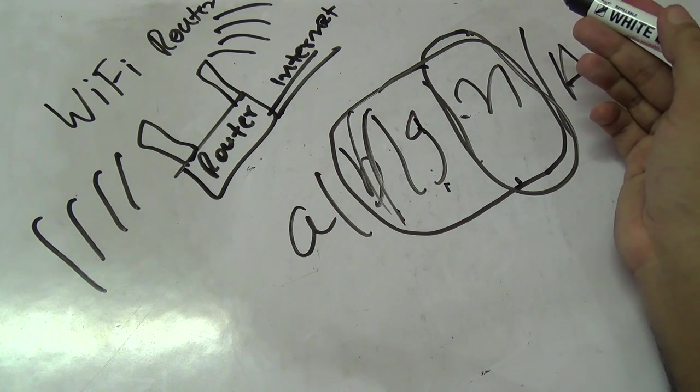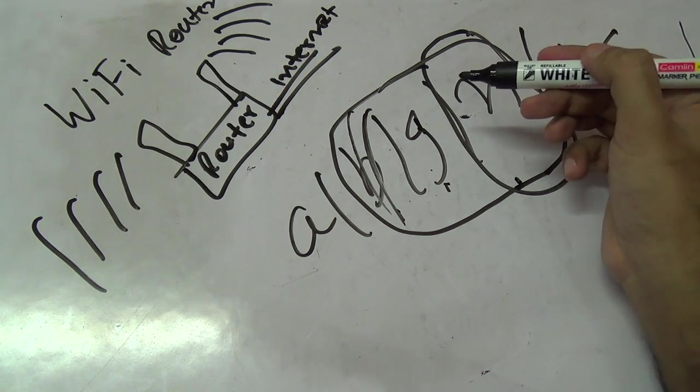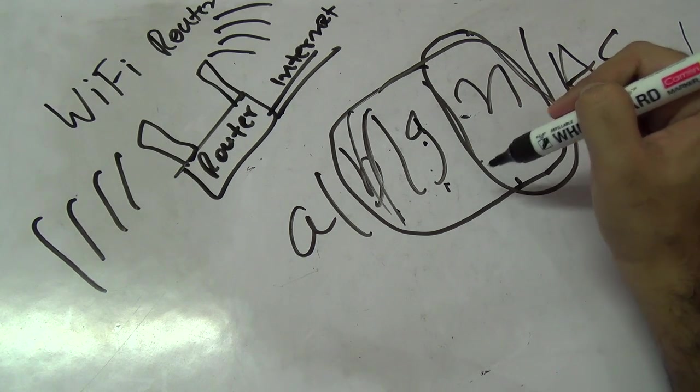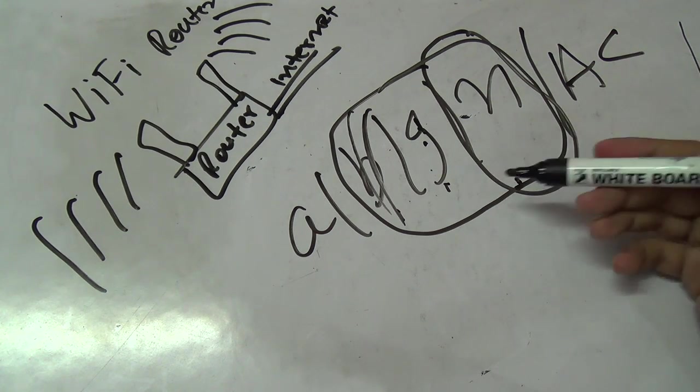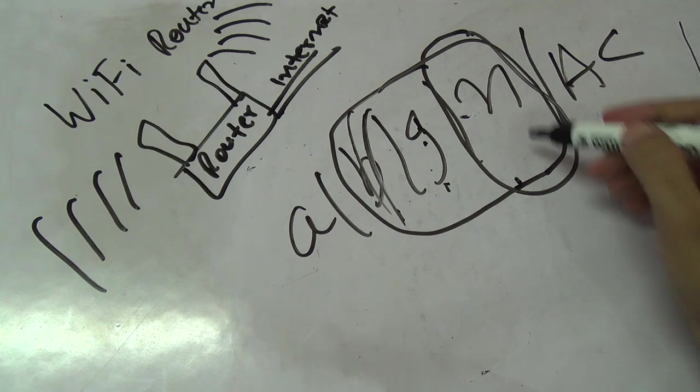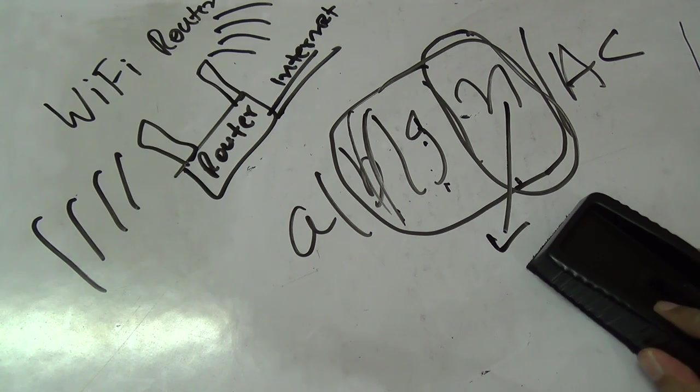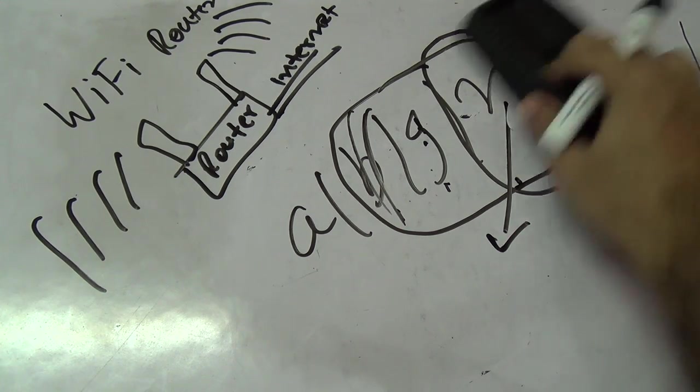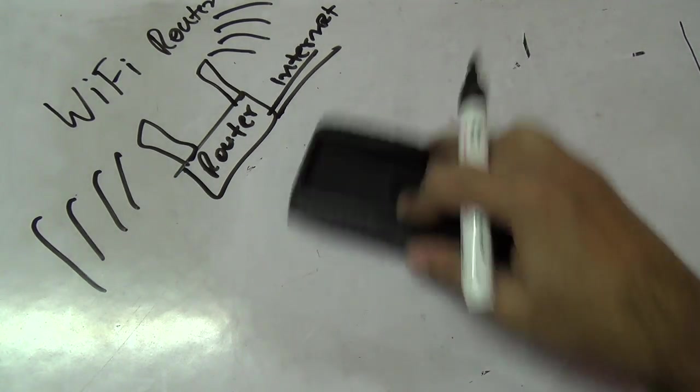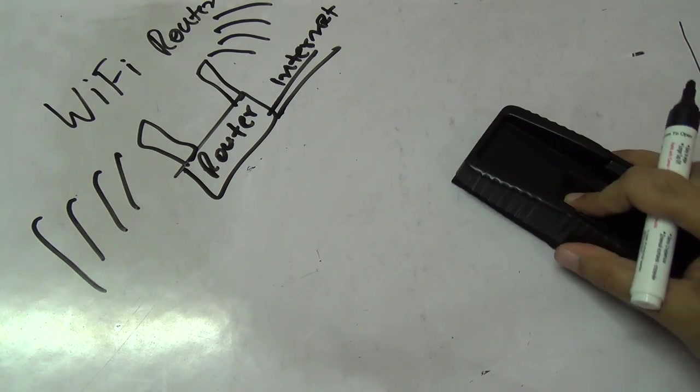This is important because some older devices only work on the g or b band. We're not seeing a lot of b devices these days, but some old devices like Nintendo game consoles are still using the g standard. Any device you've purchased recently will support the n standard. Also, if you buy an ac based router, they are backward compatible with n based routers.